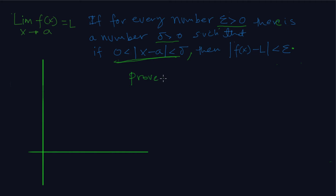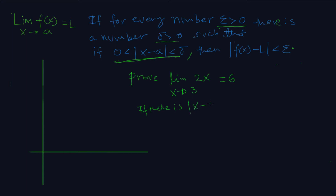Let's say we want to prove the limit of 2x as x approaches 3. So if the absolute value of x minus 3 is less than delta, then it implies that 2x — which is our f(x) — minus 6, which is L, is less than epsilon.